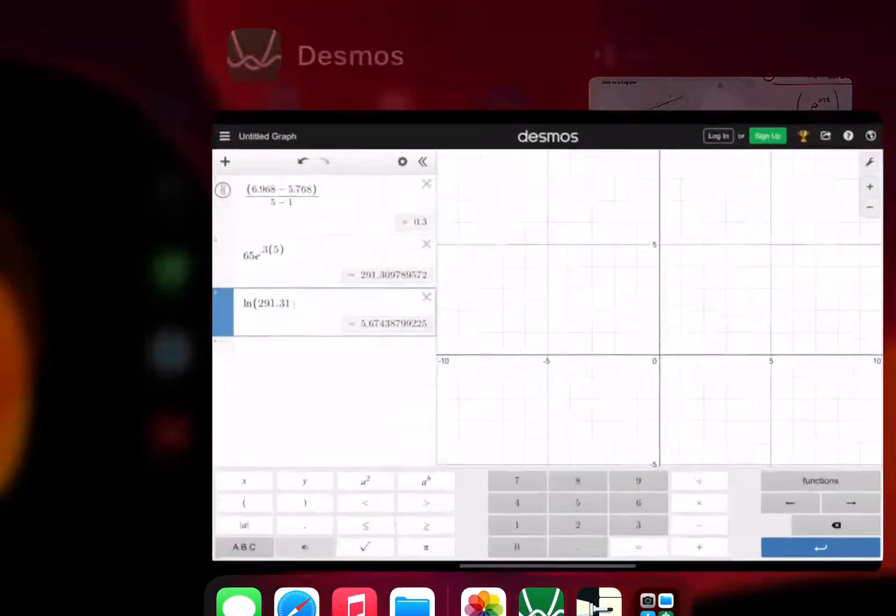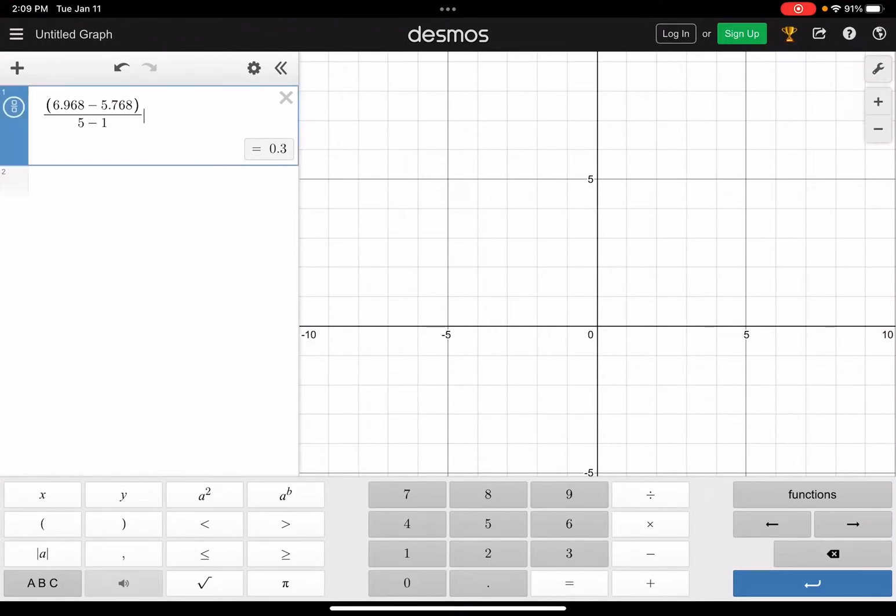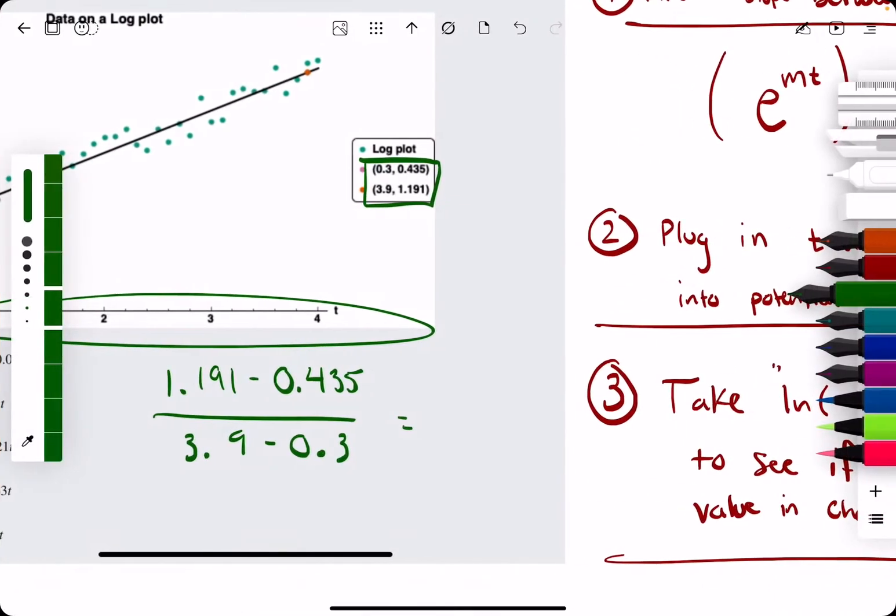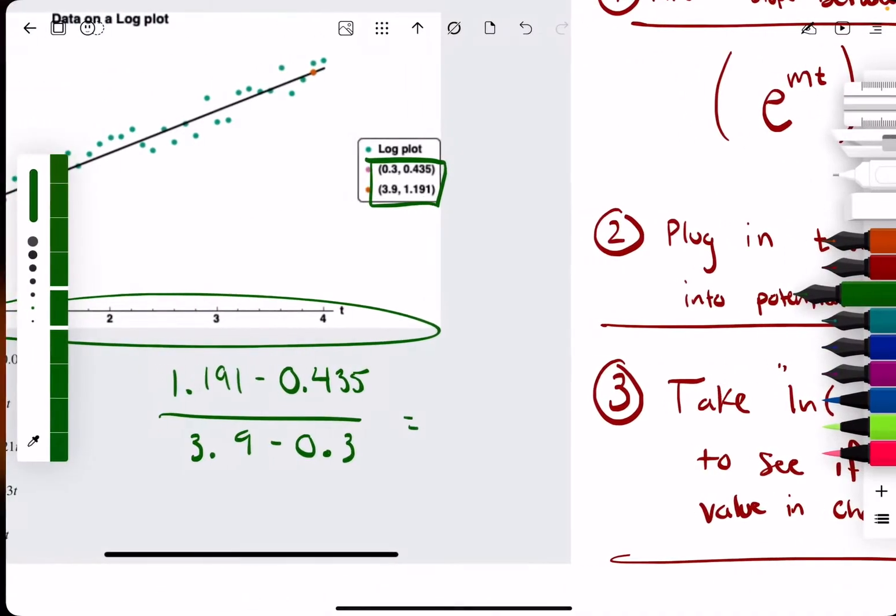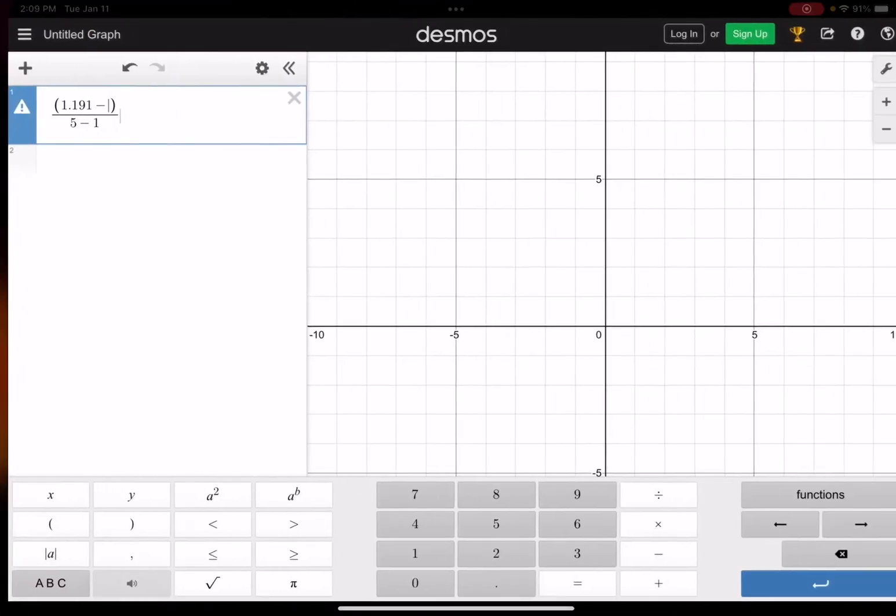Let's open up Desmos and go ahead and calculate this. On top, we have 1.191 minus 0.435.